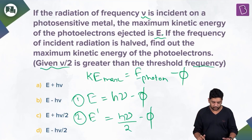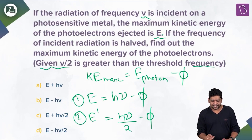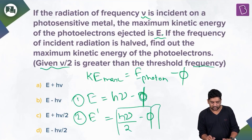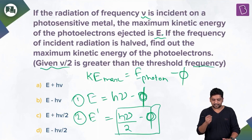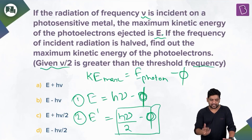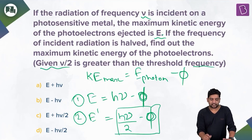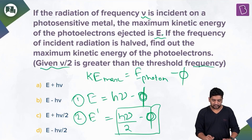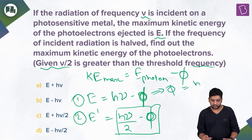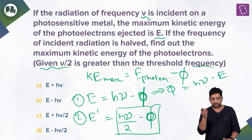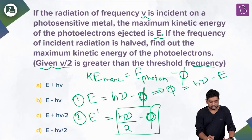All the answer options are given in terms of E and ν, so I need to eliminate φ. E′ = hν/2 − φ, but φ doesn't appear in the options, so I'll substitute using the first equation, which tells me φ = hν − E.